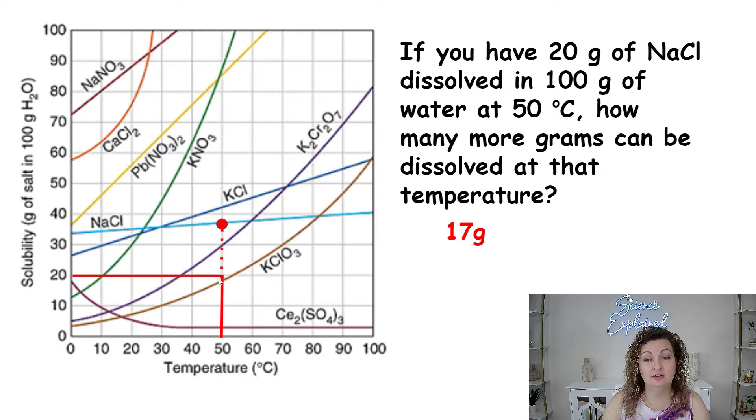So we know we're going to stay at 50 degrees Celsius. And from here we have 20 grams already dissolved. We can go another 10 and then another about seven. So about 17 more can be dissolved because remember at the saturation point on the line, that is the maximum amount that can be dissolved. So that's as far as we can go at 50 degrees Celsius. Try another one.